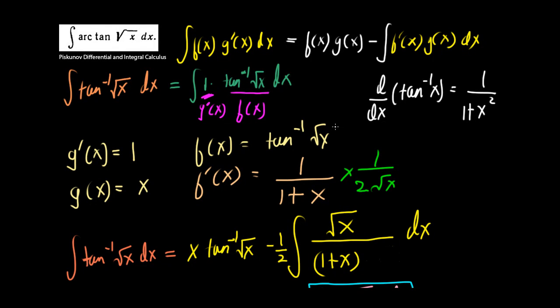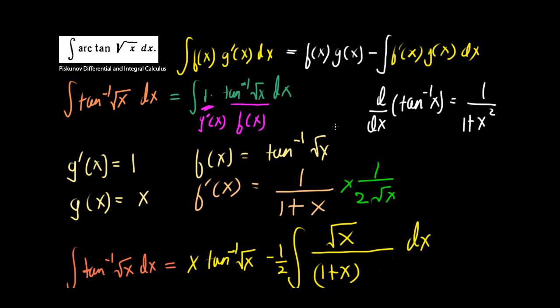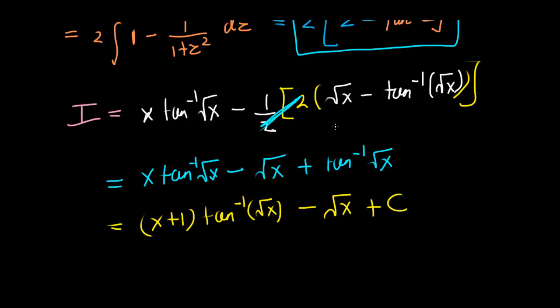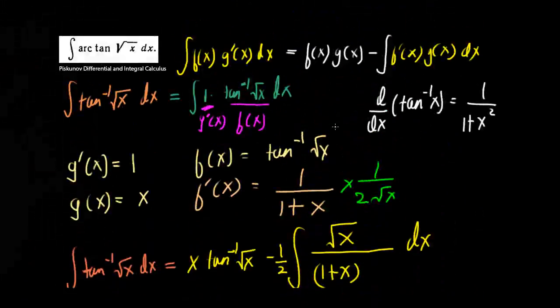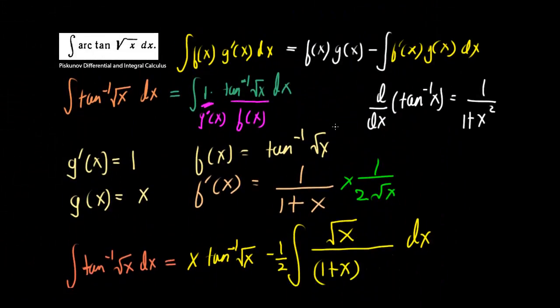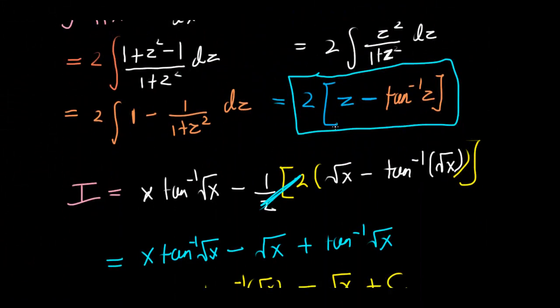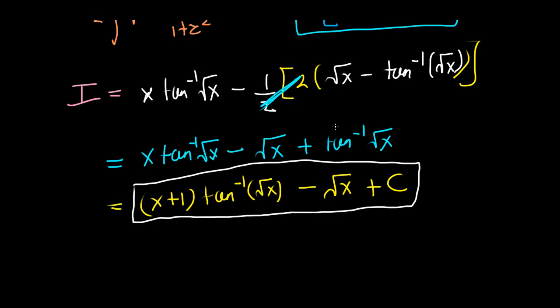This shows that integration by parts can be very useful — it comes in very handy sometimes. So our final answer is that the integral of arctan(√x) dx equals (x+1)·arctan(√x) minus √x plus C.